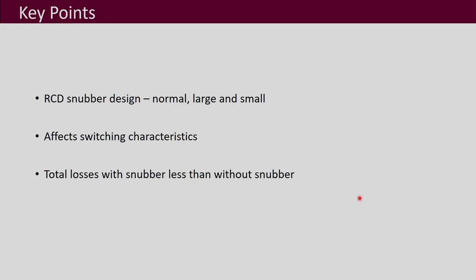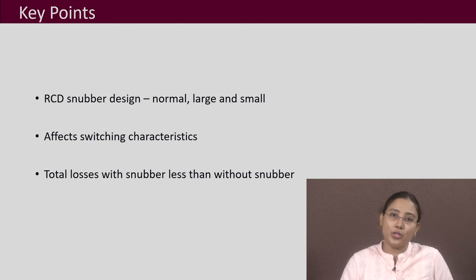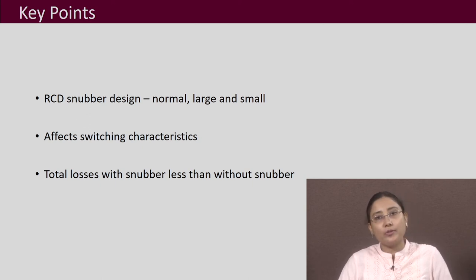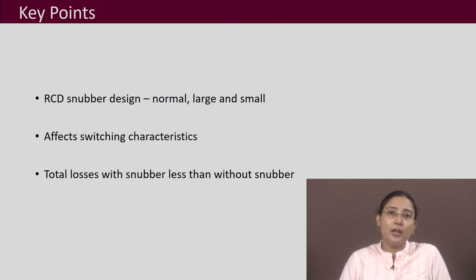The key points of this lecture: RCD snubber design analysis is done by dividing into three parts — normal snubber, small snubber, and large snubber. The choice of snubber affects switching characteristics and reduces device stress. Proper snubber design keeps the device within SOA limits. Device losses can be less than in the no-snubber case, meaning the total switching loss of the converter need not increase when a snubber is added — it may actually reduce with proper snubber values.